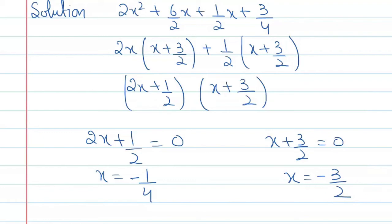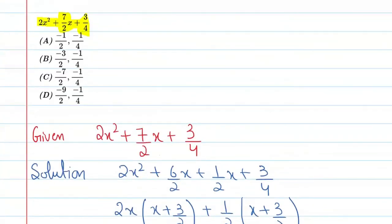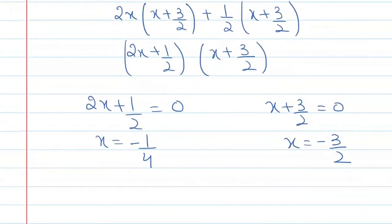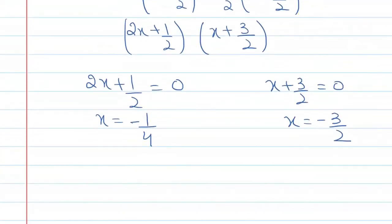So let's write the final option. The final option is B: x is equal to minus 3 by 2 and x is equal to minus 1 by 4. So let's write the final answer. Therefore, x is equal to minus 1 by 4 and x is equal to minus 3 by 2. The correct option is B.